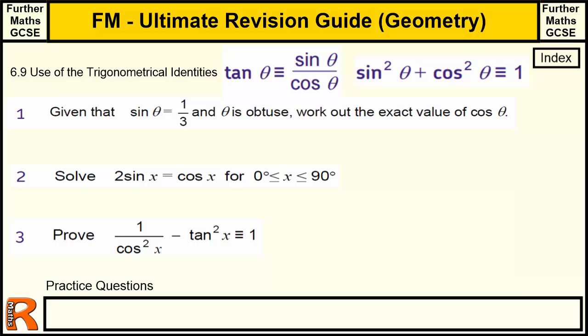6.9, Use of trigonometrical identities. Tan theta equals sine over cos, and sine squared plus cos squared equals 1. This is part of my Ultimate Revision Guide to Further Maths GCSE. This is the Geometry section.